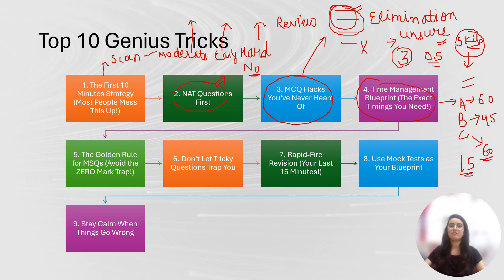The fifth is the golden rule for MSQs: avoid the zero mark trap. As you know, there is no negative marking in it. If there are four options and you feel like you are sure this option is true, this option is true, don't overthink.